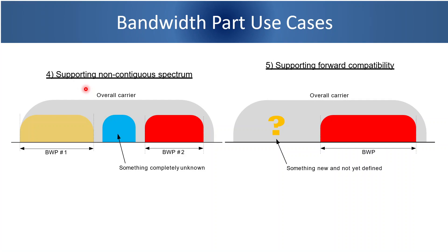The next use case is supporting non-contiguous spectrum. If there are non-contiguous spectrum segments, those can also be used with different BWPs — BWP1, BWP2 — and there can be some leftover frequency band that can be used for any service in the future. The final use case is supporting forward compatibility, where a certain part of the frequency band is reserved for something not yet defined, which can be defined in future releases.